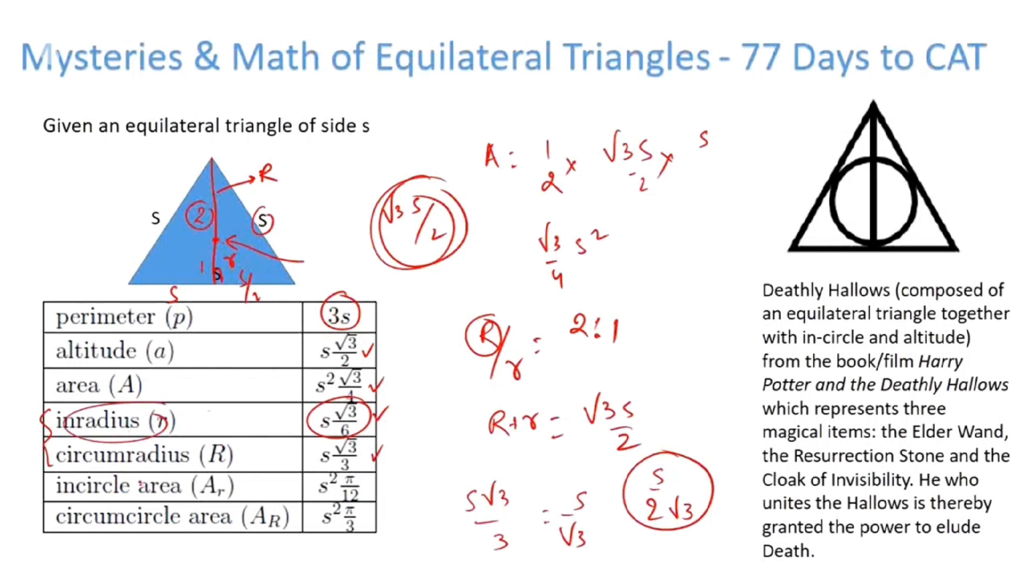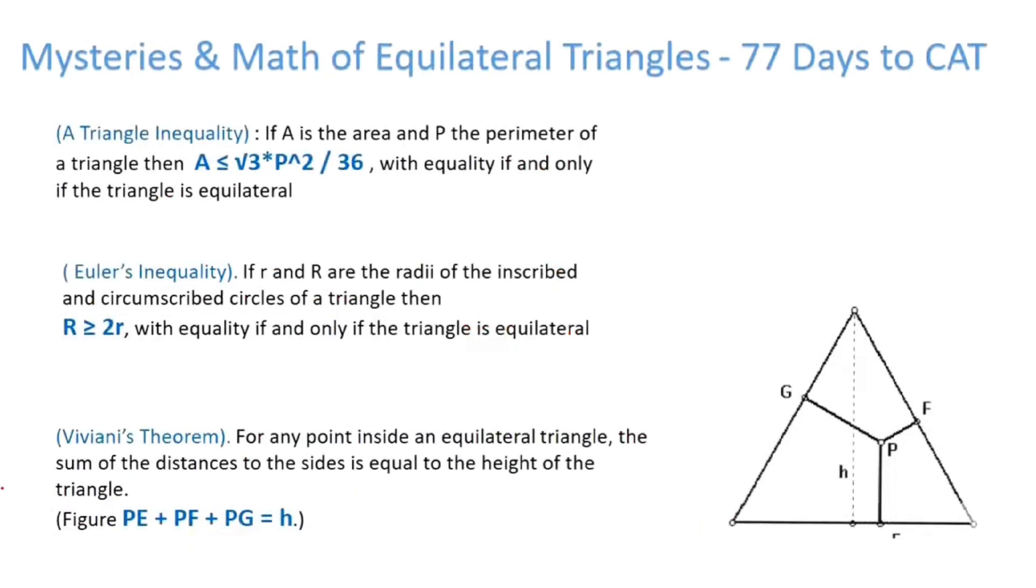If you know the inradius, you can calculate the area of the incircle pi r square. And similarly, if you know the circumradius, you can calculate the area of the circumcircle. I hope this is clear to you. Let's move ahead, see some very interesting properties. Keep them noting as you may not find it in some of the books.